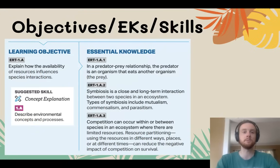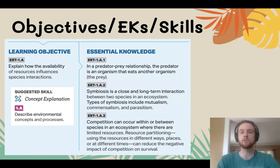Our objective for the day is to be able to explain how resource availability influences species interactions. We'll talk about predator and prey relationships, symbiosis — which is when two organisms from different species live in very close association with each other — and competition and resource partitioning or resource sharing. Our skill that we'll practice at the end of today's video is describing an environmental concept.